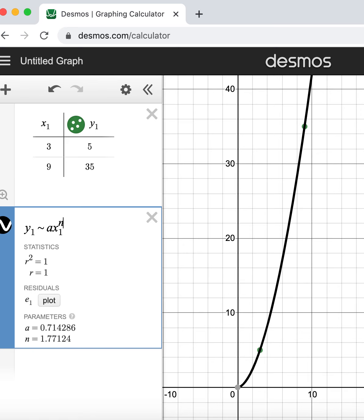What the regression is going to do here is find the best fit values of a and n that would make a curve that goes through those two points. So as we can see here our a is apparently 0.714 and our n is 1.77.